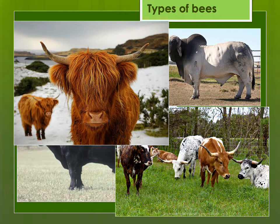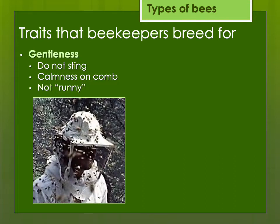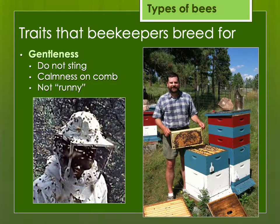Bees are like this in many ways — there really is no one best type. Some of the traits beekeepers breed for include gentleness: we don't want our bees to sting us. We like them to be calm on the comb, not what we call runny — running all over the place. I've had bees where maybe they weren't stinging a lot but they were very nervous and ran all over, as compared to putting the comb down on the side of the hive during an inspection and they just stay there and don't move. This is a photo of what Africanized bees can do when you work with them. Personally, I like to be able to check my bees on a nice warm summer day and not necessarily have to wear a bee suit.